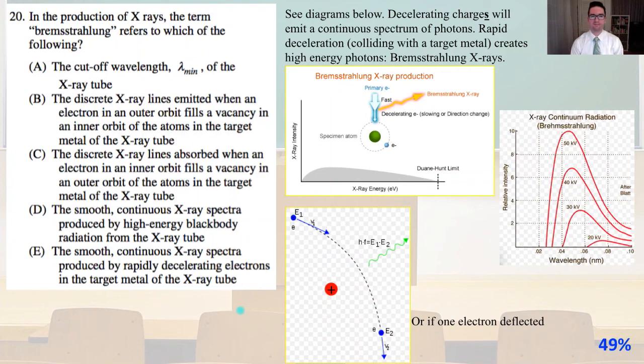Number 20. In the production of X-rays, the term Bremsstrahlung refers to which of the following? We're going to see our diagrams below. Decelerating charges will emit a continuous spectrum of photons. Rapid deceleration, which is colliding with a target metal, creates high energy photons. Bremsstrahlung X-rays. That is answer E.